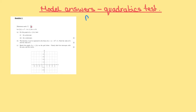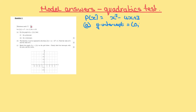In this question, f of x is equal to x squared minus 4x plus 3. Part A: to find the y-intercept, because it's in general form, the value of c is the y-intercept. Therefore, the y-intercept is equal to 0, 3.